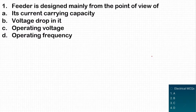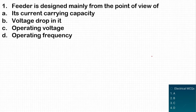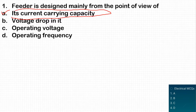The first question: a feeder is designed mainly from the point of view of which parameter? A feeder is basically designed from the point of view of its current carrying capacity, because a feeder feeds current to the distributors. So option A, current carrying capacity, is the correct answer.